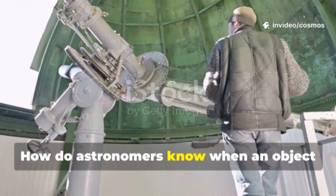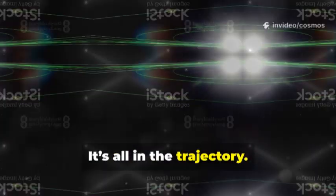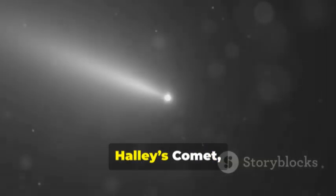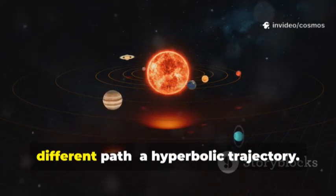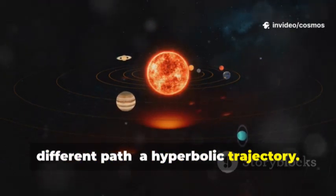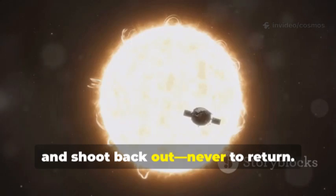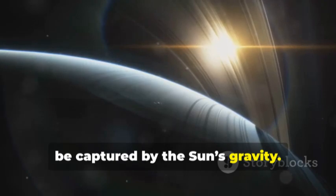How do astronomers know when an object comes from another star system? It's all in the trajectory. Solar system objects are bound to the sun, looping in predictable ellipses, like Halley's comet, always returning. But interstellar visitors follow a different path, a hyperbolic trajectory. They come in fast, swing around the sun, and shoot back out, never to return. Their speed is the giveaway, too fast to be captured by the sun's gravity.